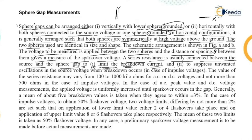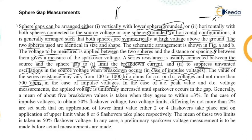A series resistance is generally connected between the source and the sphere gap. The purpose is to limit the breakdown current, as current will definitely occur, as well as to suppress unwanted oscillations — resistance is the best electrical element to suppress oscillations in the source voltage when breakdown occurs. In case of impulse voltages, the value of the series resistance should not exceed 500 ohms.